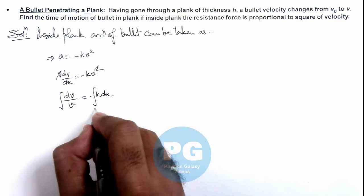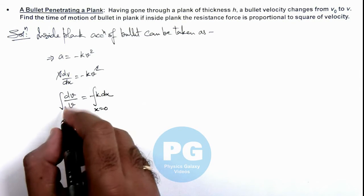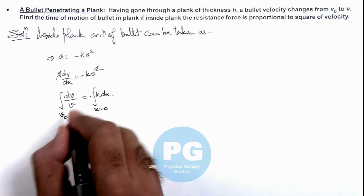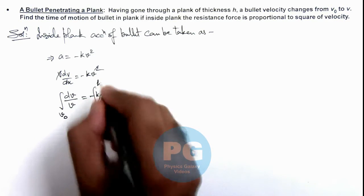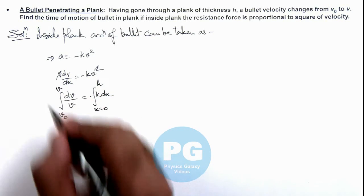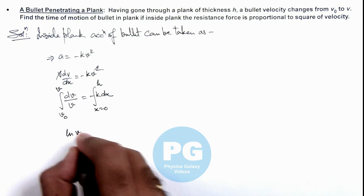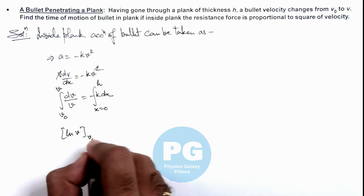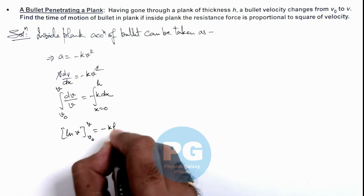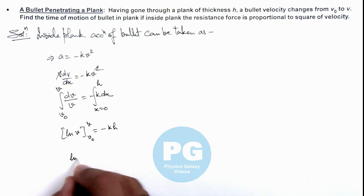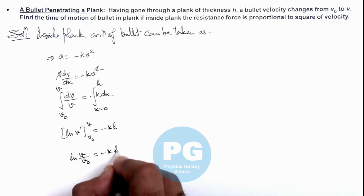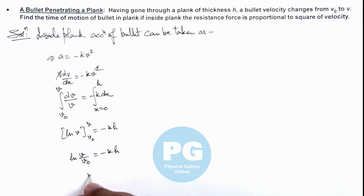with x = 0 the velocity of bullet was v₀, and after traveling a distance h in the plank its velocity reduces to v. On left hand side this becomes ln(v) with limits from v₀ to v, and on right hand side it is -kh. This gives ln(v) - ln(v₀) = ln(v/v₀) = -kh, which gives us the value of the proportionality constant k.